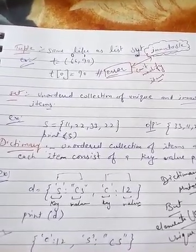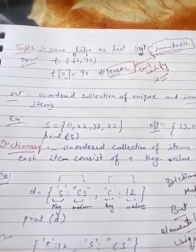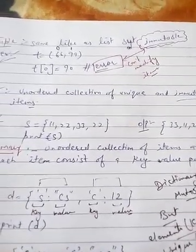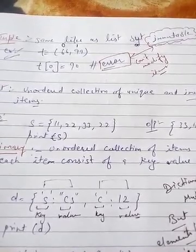Now the next data type is set. Set is an unordered collection of unique and immutable items. Immutable items means we are including elements in the set.